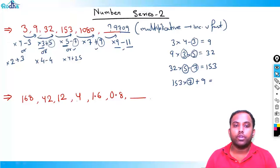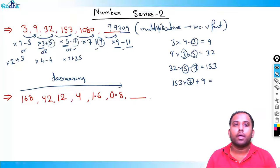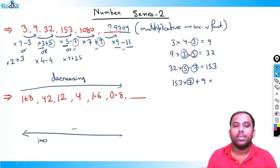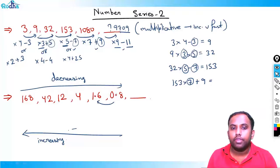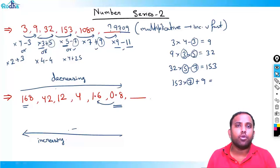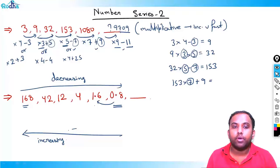Now the next series: 168, 42, 12, 4, 1.6, 0.8, and something. You can see it is decreasing quite uniformly. It's easier to think of it as increasing from 0.8 upward, since multiplying is easier than dividing. Starting from 0.8, this is a multiplicative series increasing fast to 168.